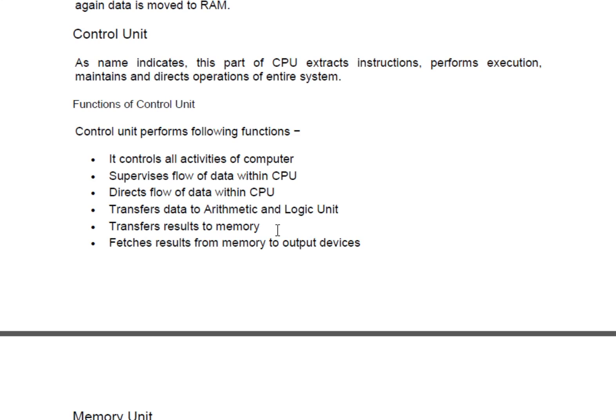Data or information can also be transferred to memory when a user is going to save data. For example, if you open a file in Notepad and are going to save it, whatever you have typed in the computer will be transferred to memory through the control unit. Finally, the control unit fetches the result from memory to the output — for example, when you are opening a file from the hard disk, the control unit manages the data to the monitor.